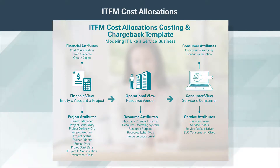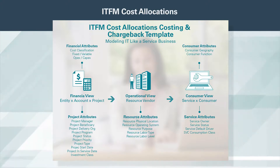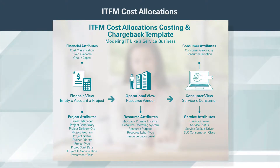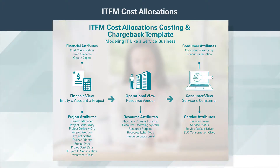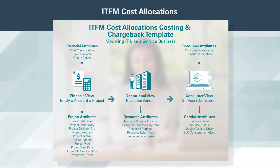Entity, account, and project are the base financial dimensions where we expect financial data to be available. Resource and vendor are the intermediate dimensions that represent the operations in IT, and are often the first layer of allocations. Last, we have the target dimensions: service and consumer. The attributes associated with each dimension provide hints into the kinds of reporting the model template can support.